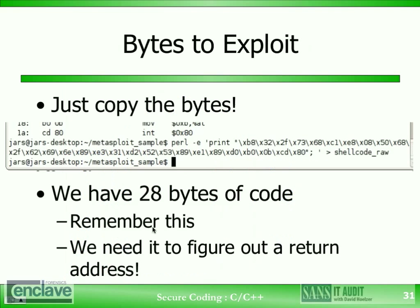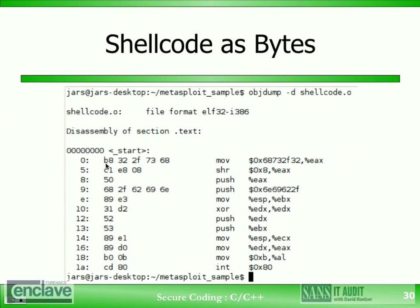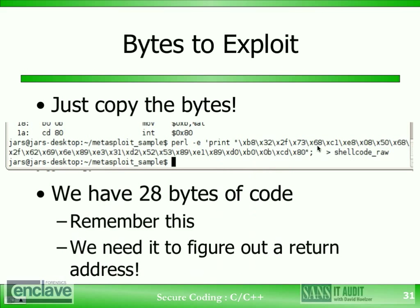That code there is what we need — that's the binary portion of the exploit. This is our shellcode. With that in hand, we can just copy the bytes. In this example we've used Perl to do it — Perl -e — and we print each byte using a bash \x in front of each byte. You can see it begins here: b8-3-2-2-f. If you go back one slide, you'll see that it matches exactly: b8-3-2-2-f, 7-3-6-8. We just take the bytes one at a time, string them together, and print them into an intermediate file.